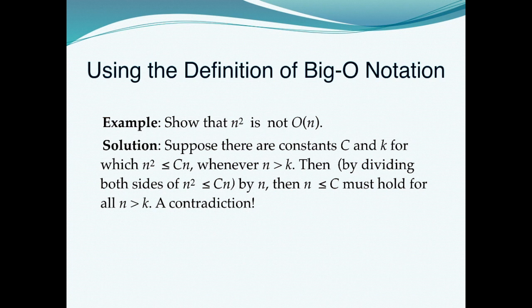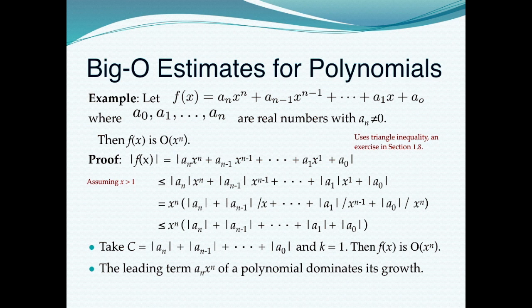For polynomial functions of the form f(x) = aₙxⁿ + … + a₀ where aₙ ≠ 0, f(x) is O(xⁿ). This is very simple to apply: a function like f(x) = x⁴ has Big O of x⁵, a function like f(x) = x² has Big O of x³, and so on based on this definition.